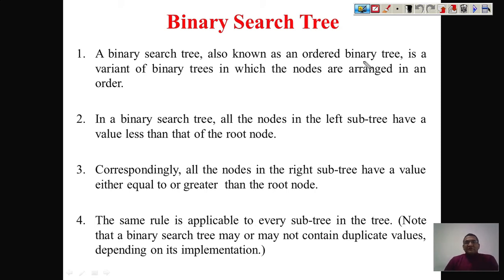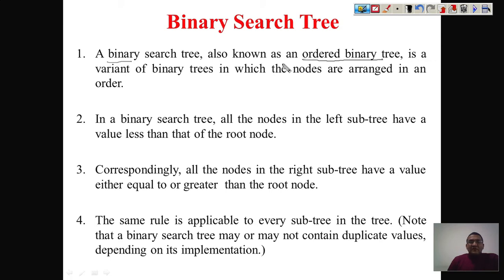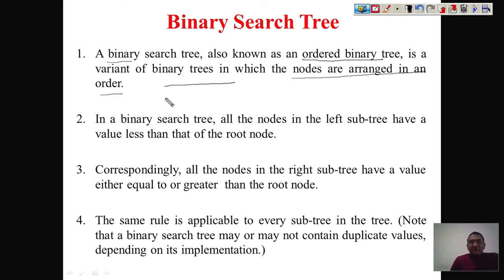Binary search tree, as the name suggests, is a binary tree — and we call it an ordered binary tree. A binary tree is a tree where every node can have at most two children, but we are not associating any ordering property to it. An ordered binary tree means the nodes and parents have a defined relationship, so when you construct the tree you must maintain that relationship.